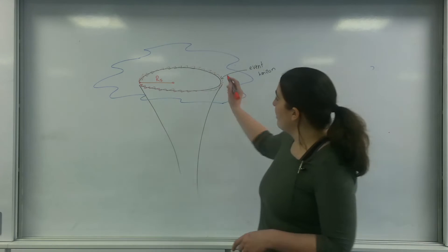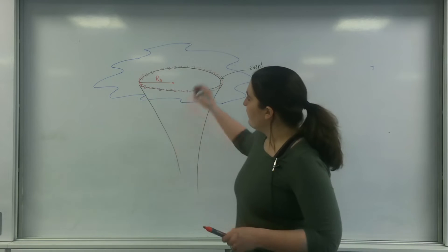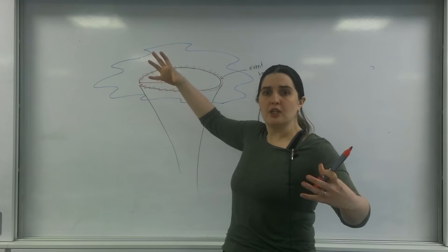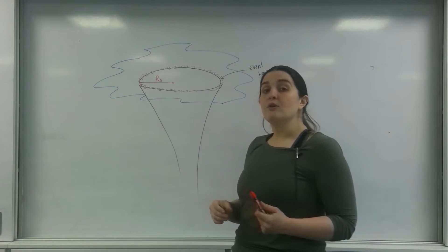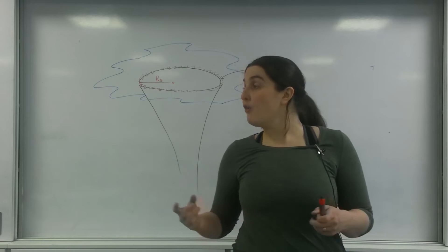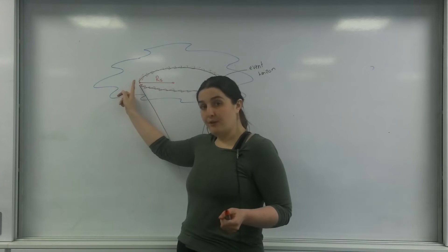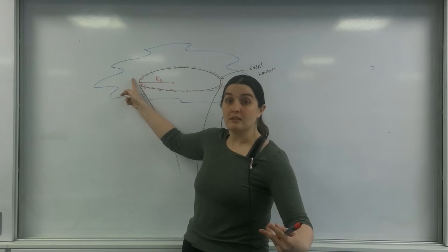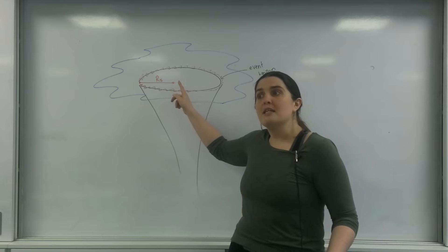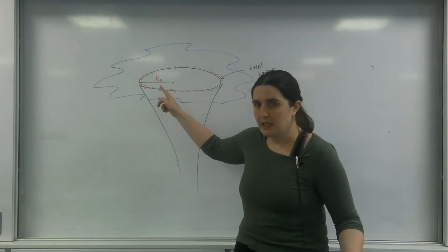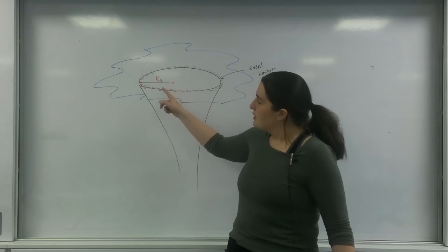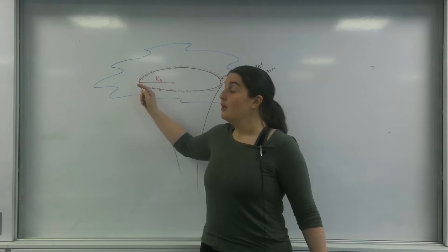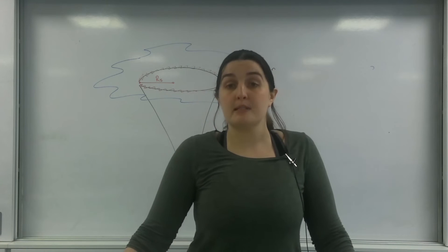Around this black hole event horizon, things collide with each other and emit loads of energy. This energy is able to escape because on this side of the event horizon you can escape — you are moving at the speed of light. If you were on the other side of the event horizon, you would need to be moving faster than the speed of light to leave. So on this side, because it's EM radiation, it can actually escape.